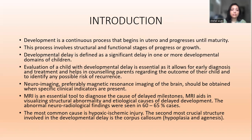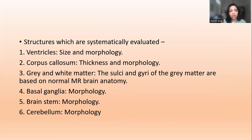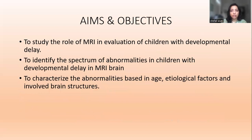The most common cause is hypoxic ischemic injury, and the second most crucial structure involved is the corpus callosum. Structures systematically evaluated are ventricles, corpus callosum, grey and white matter, basal ganglia, brainstem, and cerebellum. The aims and objectives of this paper are to study the role of MRI in evaluation of children with developmental delay, to identify the spectrum of abnormalities on MRI brain, and to characterize those abnormalities based on age, etiological factors, and involved brain structures.